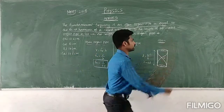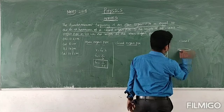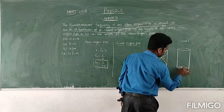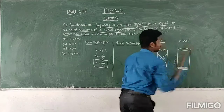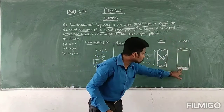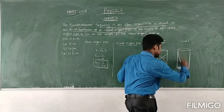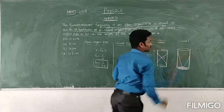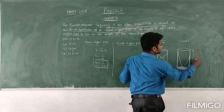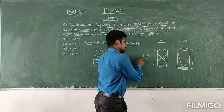For the closed organ pipe: one end will be closed and the other end will be open. In the open end, an antinode will form. At the closed end, a node will form. So the fundamental frequency pattern for the closed organ pipe is determined by the length of the pipe.